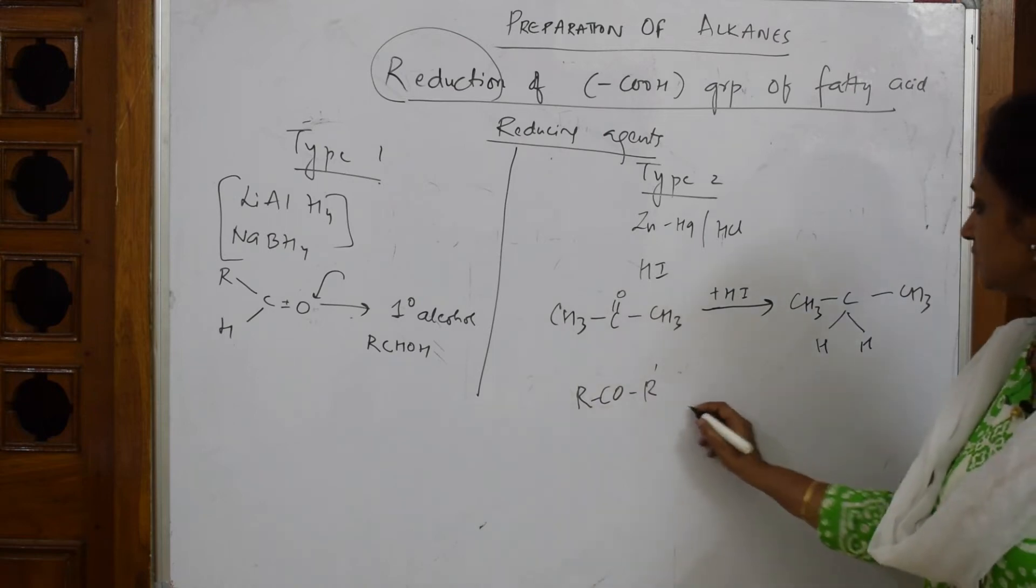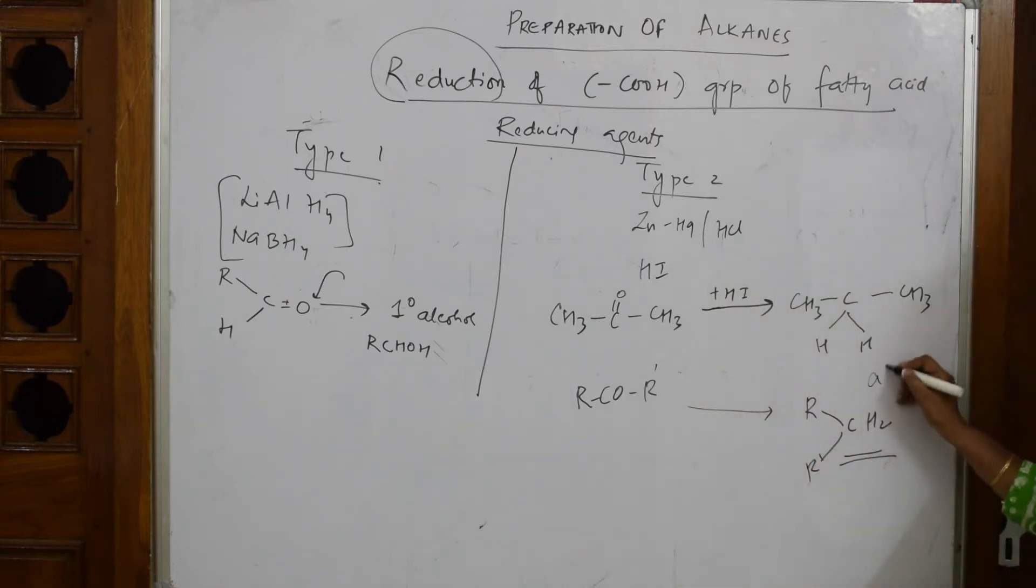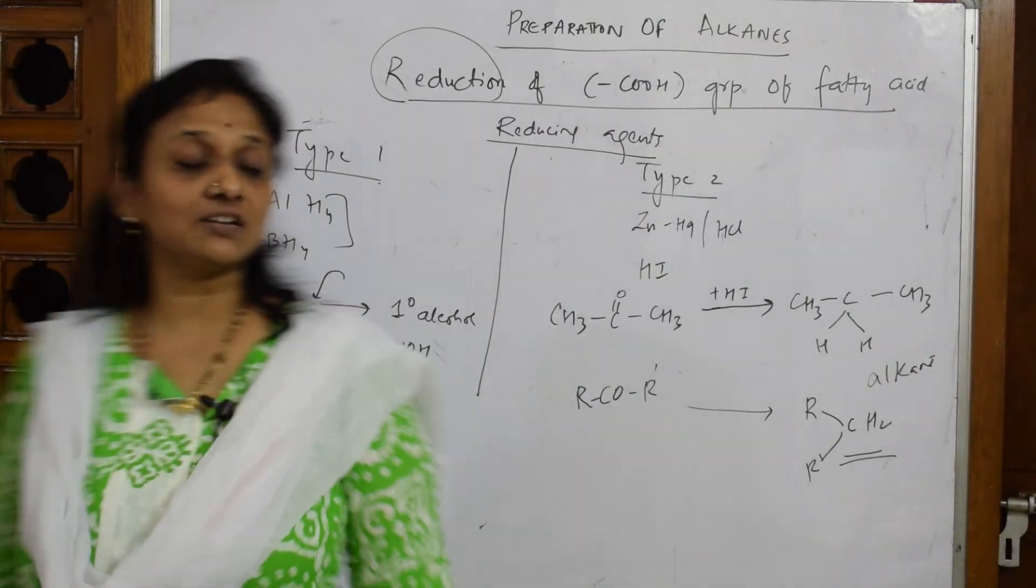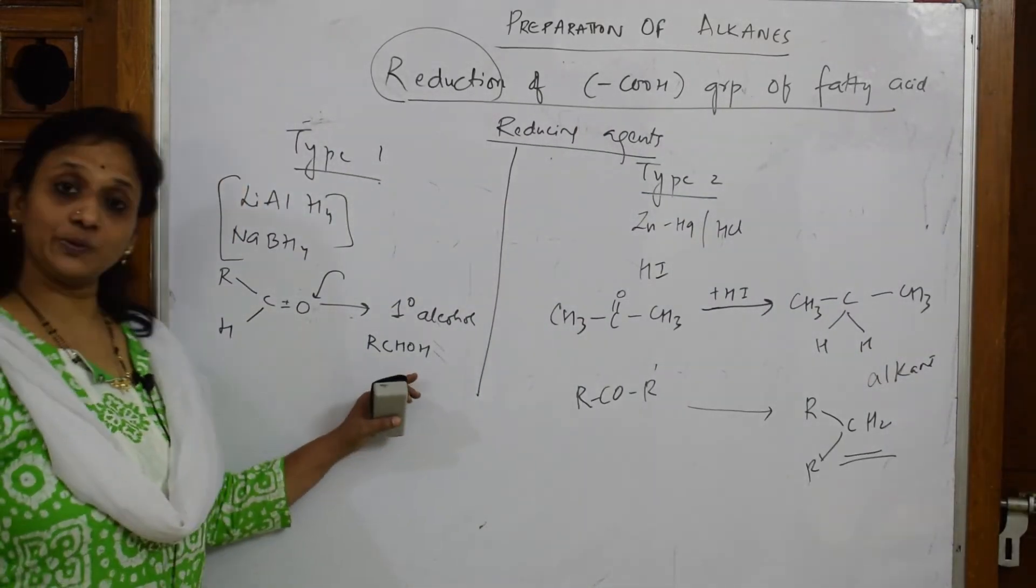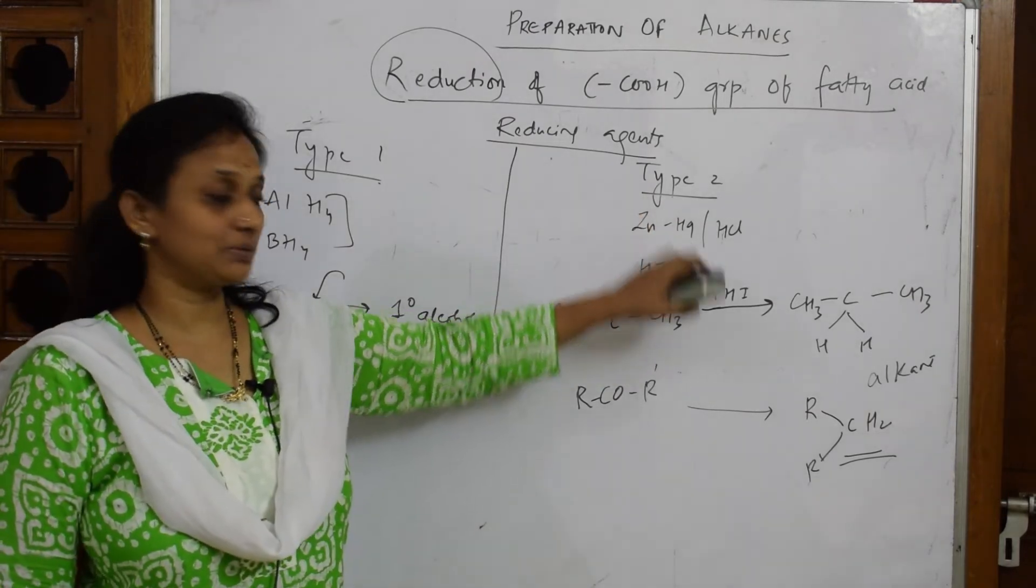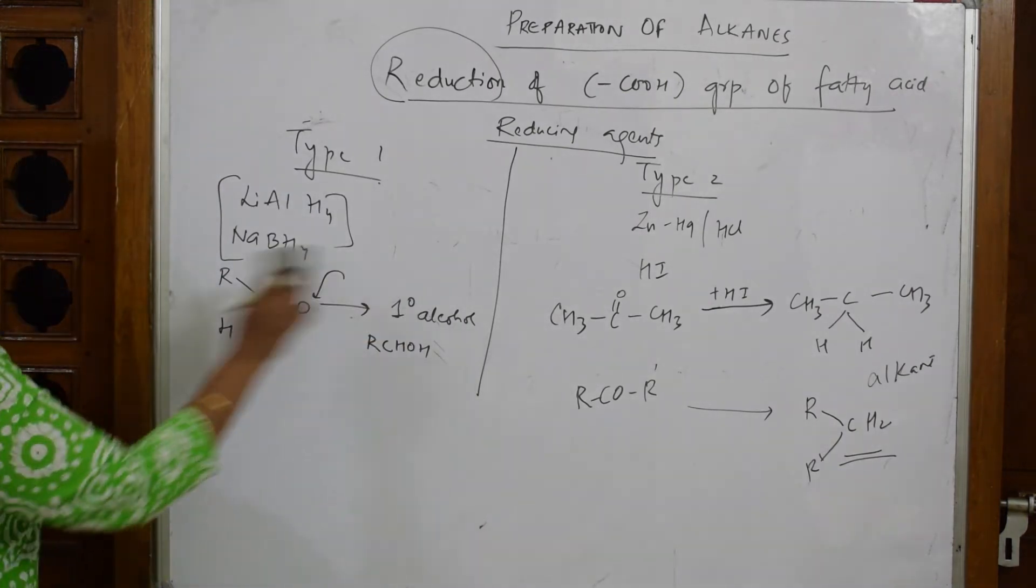If I take this, it's going to convert into R-CH2-R' in this way. It's going to convert into an alkane. These agents will convert the carbonyl group into primary alcohol. If you find HI or zinc amalgam HCl, you will get converted into an alkane.